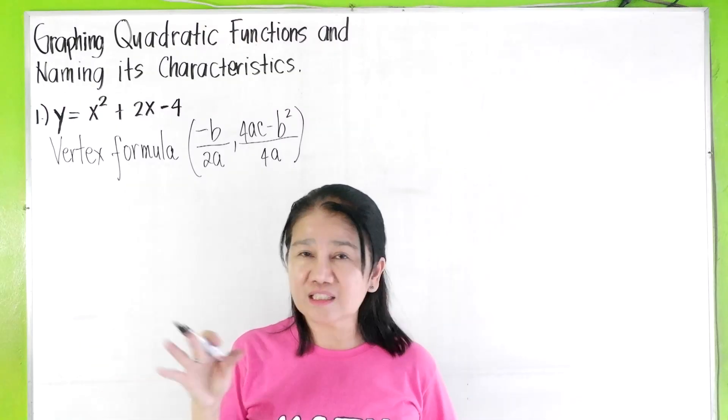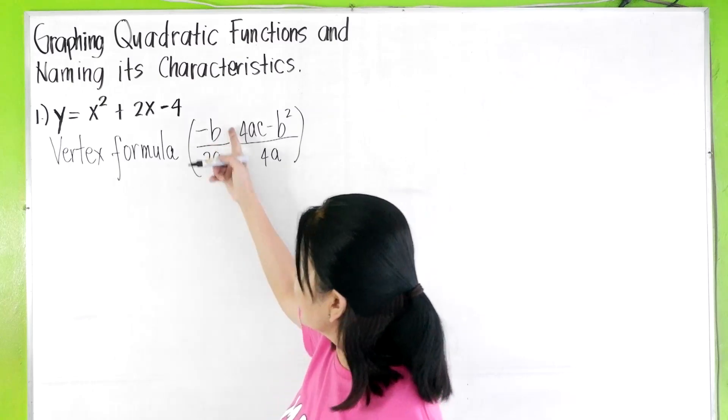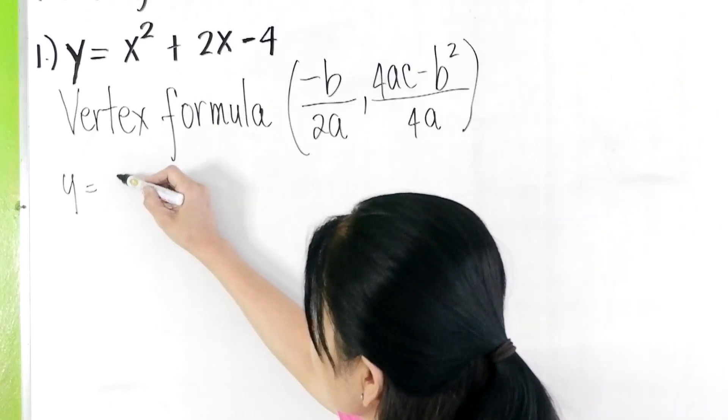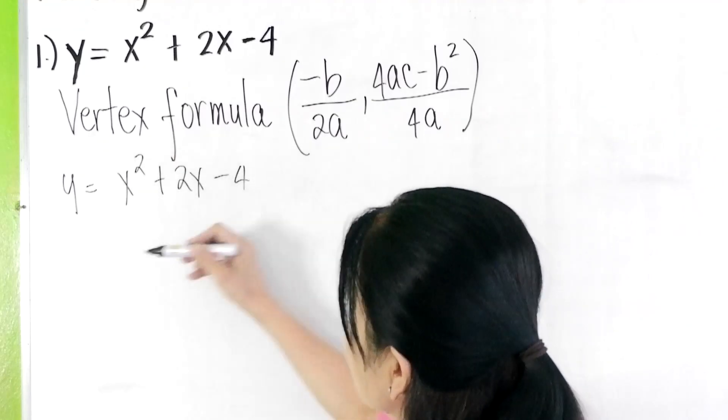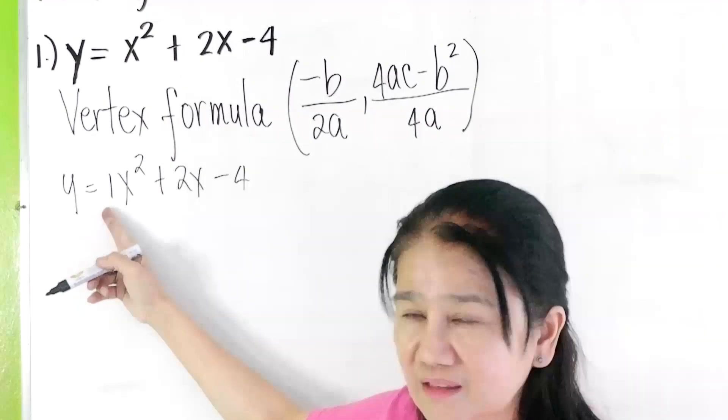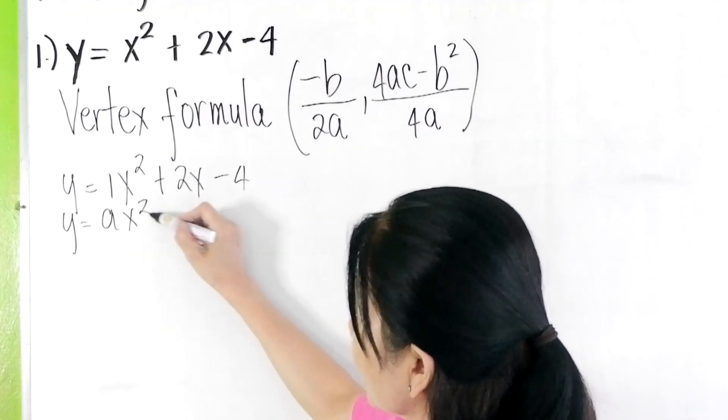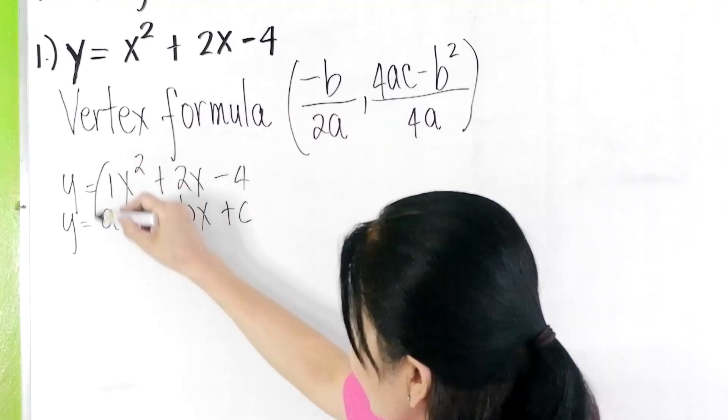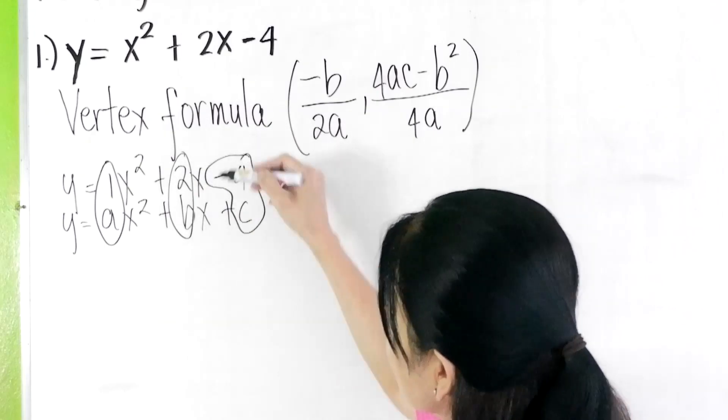Because once you know the vertex, it is easy to graph. So let's identify the a, b, c here. When you're given y = x² + 2x - 4, this is understood to be 1. So this is now in the form y = ax² + bx + c. Your a is 1, your b is 2, and your c is -4.